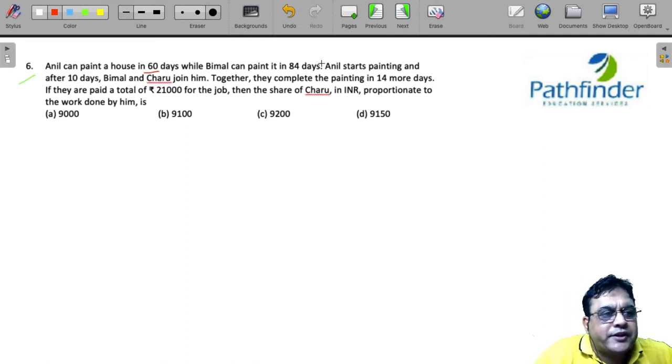Anil can paint a house in 60 days while Bimal can paint in 84 days. Anil starts painting and after 10 days Bimal and Charu join him.